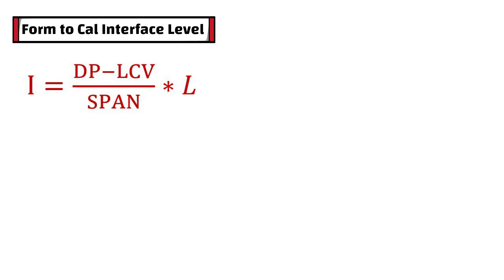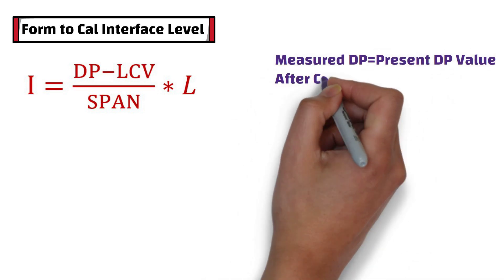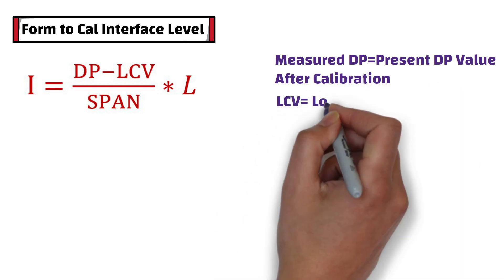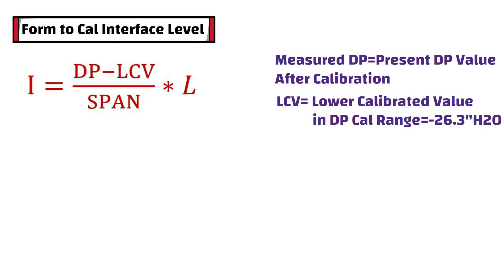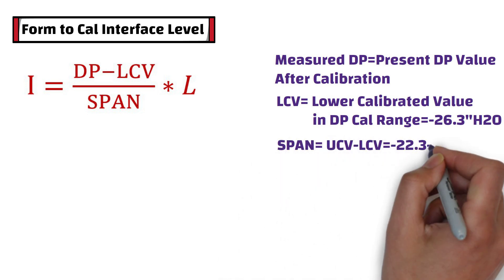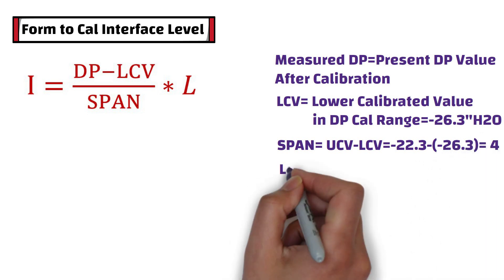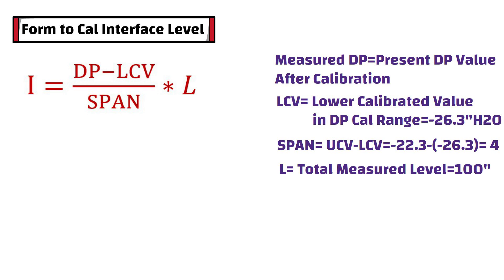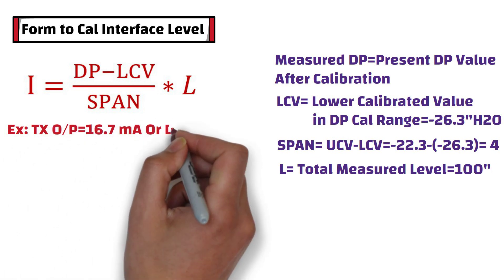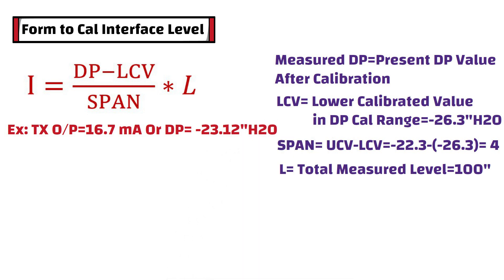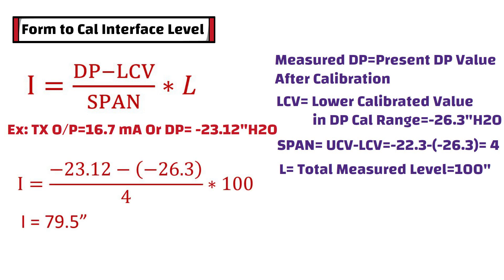This is the standard formula to calculate interface level. In this equation, DP is the present measured differential pressure value after calibration. LCV means lower calibrated value, which is minus 26.3 inches H2O in this example. Span is the difference between the upper calibrated value and the lower calibrated value, which is 4. L is the total measured level, which is 100 inches. To determine where the interface is, let's assume the present transmitter output is 16.7 milliamps, or the present measured differential pressure is minus 23.12 inches H2O. Putting all these values into the equation, you will get 79.5 inches, which is our interface level in this example.